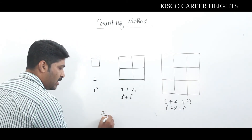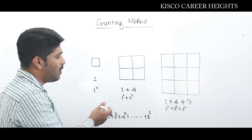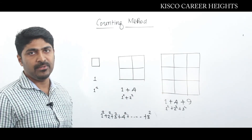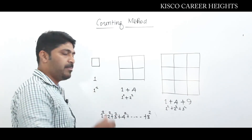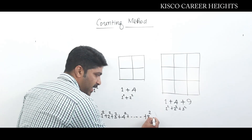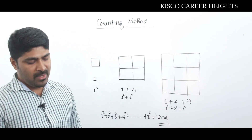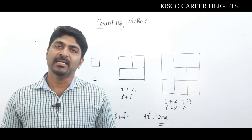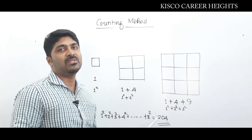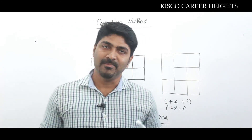That is 1² + 2² + 3² + 4² and so on up to 8². You can individually compute all the square values or apply the summation formula. The sum of all these values is equal to 204. Don't forget this value — you may get these questions in almost all competitive exams. The total number of all possible squares on a chess board is 204.